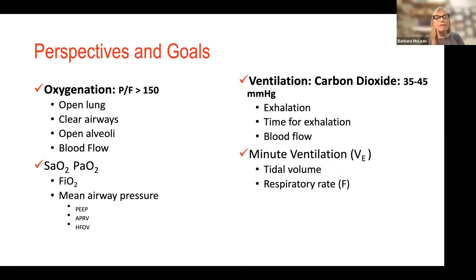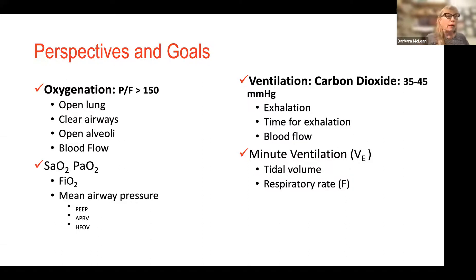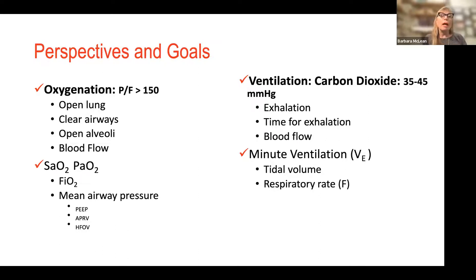For the majority of us, the first step is to increase PEEP to improve mean airway pressure and open up the lung so the gas we're giving actually gets to the alveoli. The second approach many use is pressure control inverse ratio — spending more time in inspiration than exhalation, allowing more time to open the lung. Two other strategies are APRV (airway pressure release ventilation) and HFOV (high frequency oscillation or jet ventilation). They're all mean airway pressure strategies.